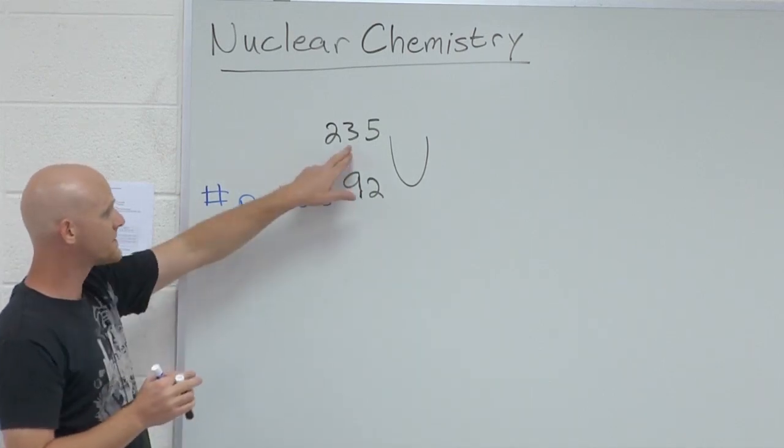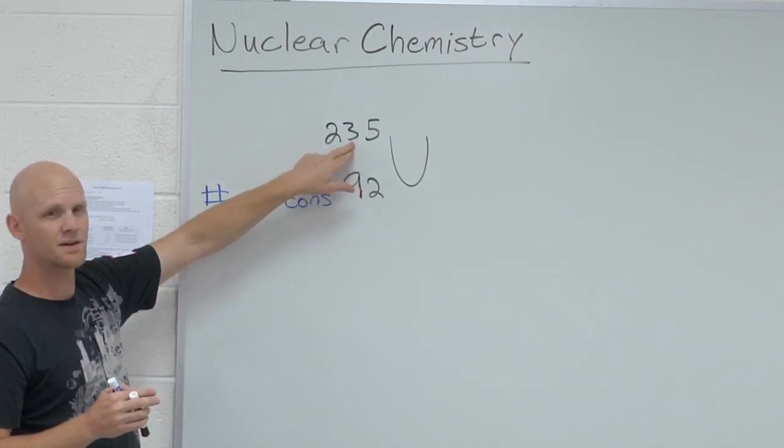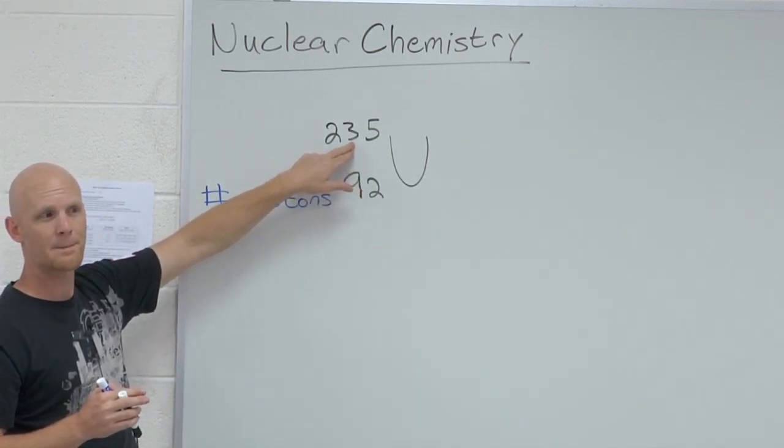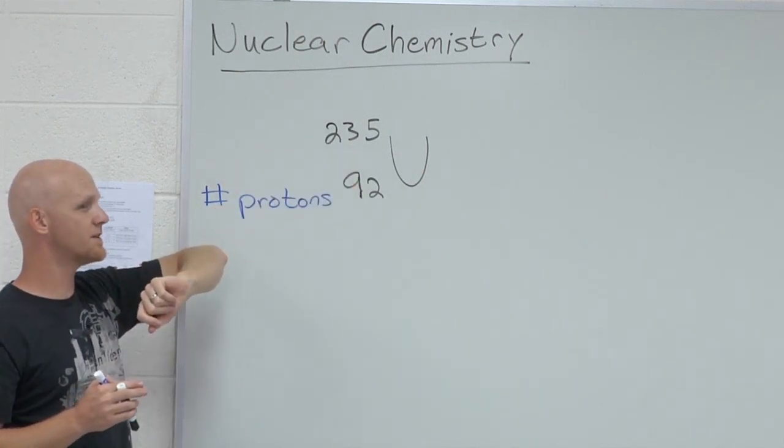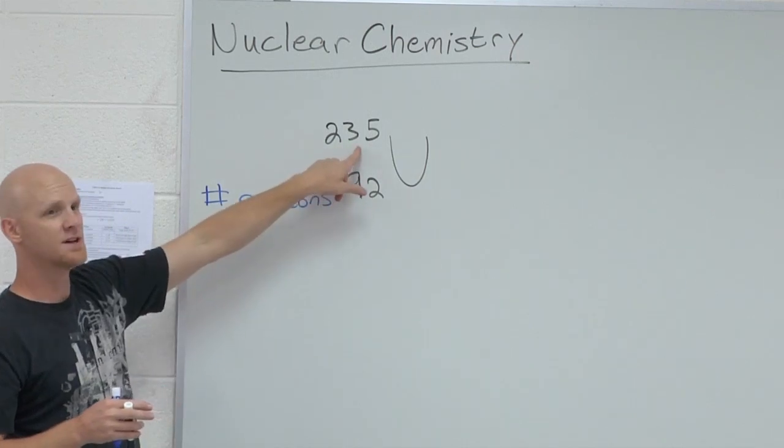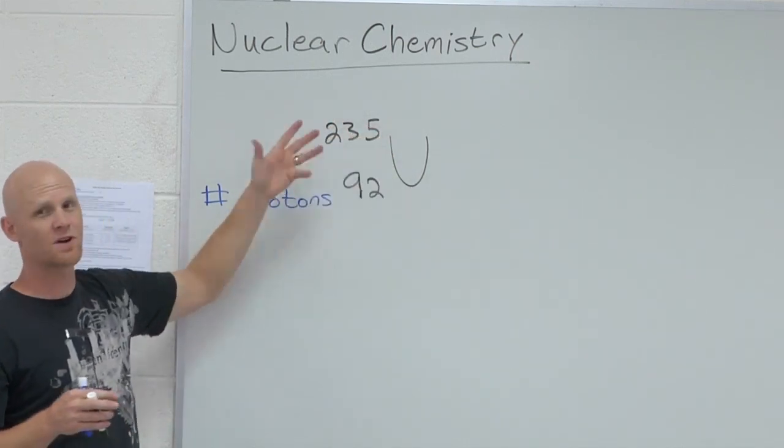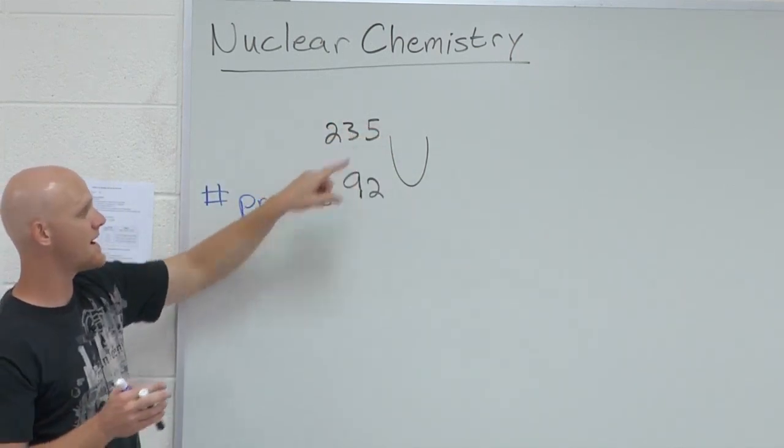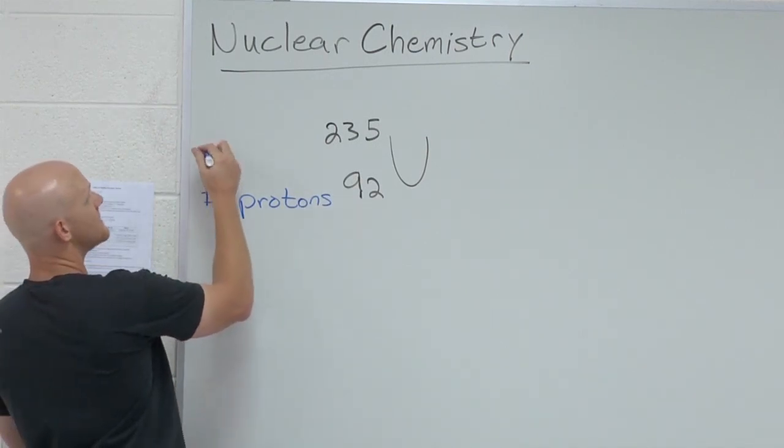So what do you call the top number here? It's not the atomic weight actually, there's another name for it. The atomic weight's the average that's on the periodic table, but this is not the average. This is for this specific isotope, we just call it the mass number. So you got the atomic number, the mass number.